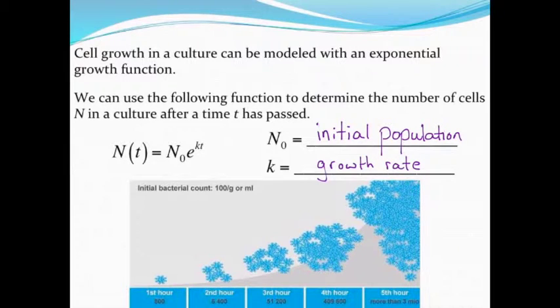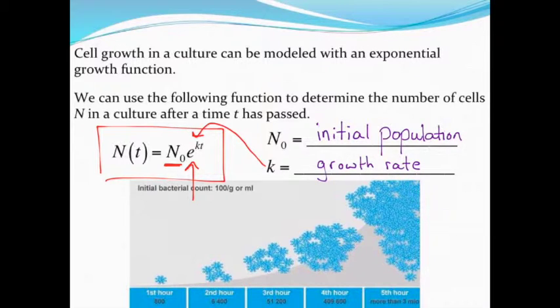When a population is growing without a limit, we can use this function to model that population's growth. N sub zero would represent our initial population. E is that Euler's number, that natural base. K is going to be a constant, specifically that constant is our growth rate, and T is going to be our time period.